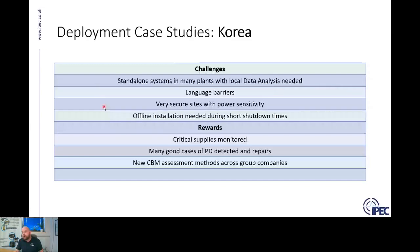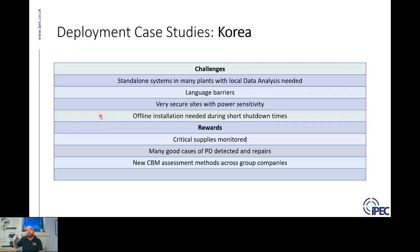Very secure sites with power sensitivity — that comes back to the standalone approach. Offline installation is needed during shutdown. For a lot of modern switchgear, sensors may need to be installed inside cable terminations, so a shutdown needs to be scheduled. With processing plants, we tend to time the installation with the planned shutdown of assets for maintenance. They tend to have quite robust maintenance schedules anyway. So we plan the installation with maintenance and make sure our systems are very quick to install — we only need to install the sensors during a shutdown.